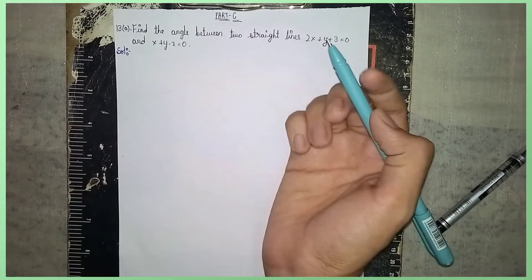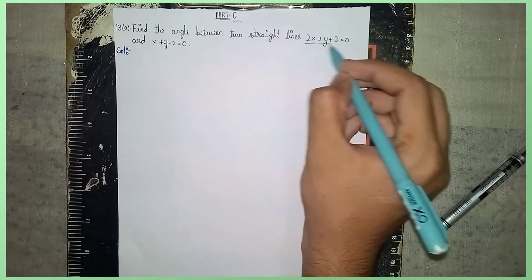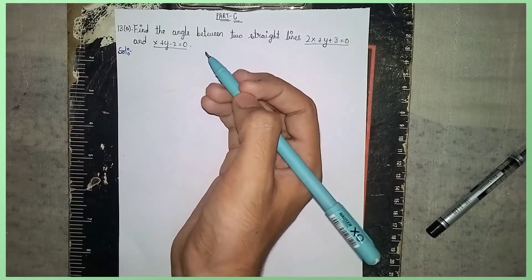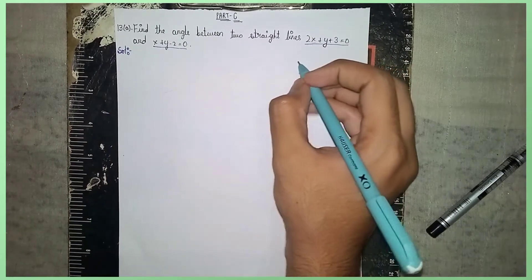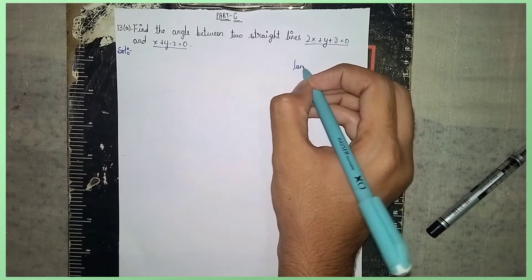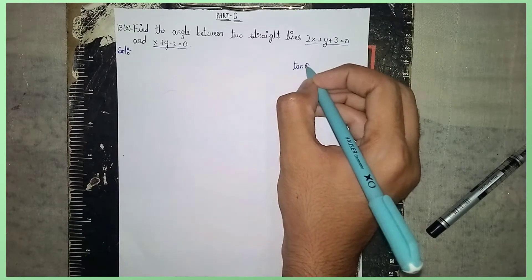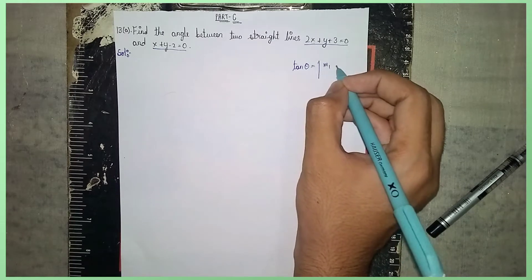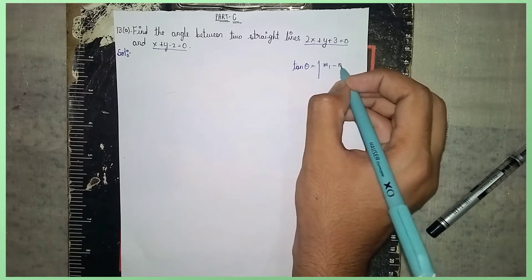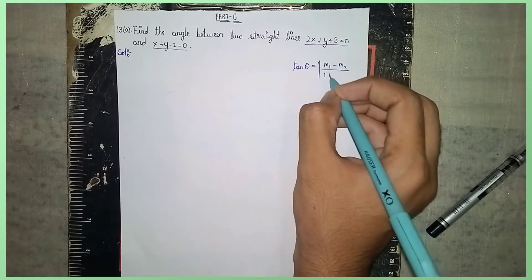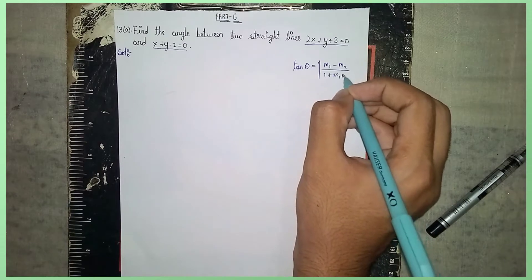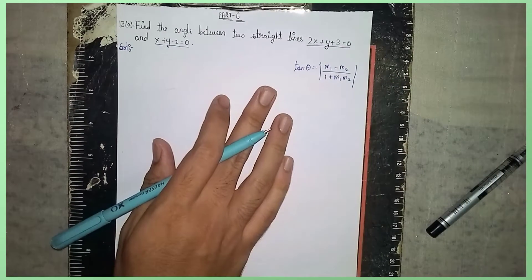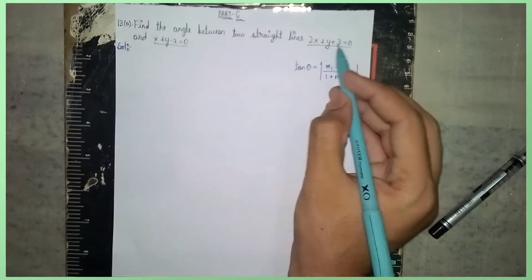So we need to find the angle between the two straight lines. The formula for the angle between two straight lines is: tan theta equals under mod m1 minus m2 divided by one plus m1 into m2. This is the formula. The problem gives us the equations, so first we need to find m1 and m2, the slopes.